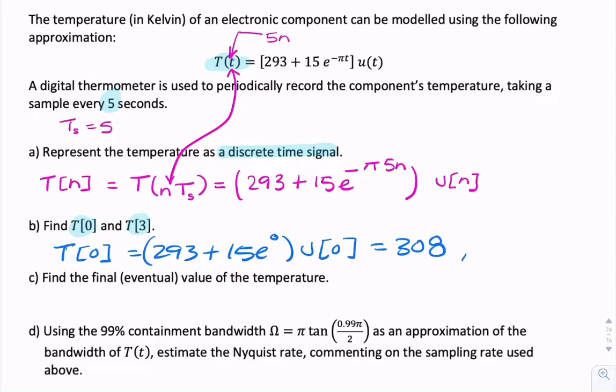And then we'll do the same. We'll find T of 1. And that's almost 293. So what we're doing is we're just replacing that value of n with the integers 0 and 3.